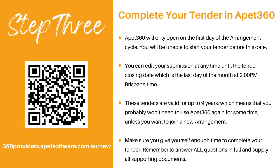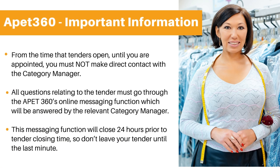Step 3: Complete your tender in APET 360. APET 360 will only open on the first day of the arrangement cycle — you will be unable to start your tender before this date. You can edit your submission at any time until the tender closing date, which is the last day of the month at 2pm Brisbane time. These tenders are valid up to 9 years, so you probably won't need to use APET 360 again for some time unless you want to join a new arrangement. Make sure you give yourself enough time to complete the tender and remember to answer all questions in full and supply all supporting documents. From the time tenders open until you are appointed, you must not make direct contact with the category manager — questions must go through APET 360's online messaging function. The messaging function will close 24 hours prior to the tender closing time, so please don't leave your tender until the last minute.